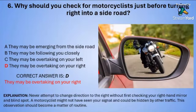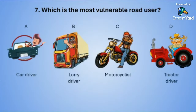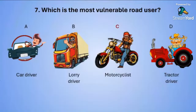Question number seven: Which is the most vulnerable road user? A: car driver. B: lorry driver. C: motorcyclist. Or D: tractor driver. The correct answer is C — the motorcyclist.